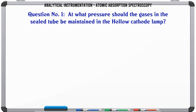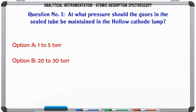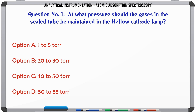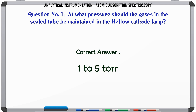At what pressure should the gases in the sealed tube be maintained in the hollow cathode lamp? A. 1 to 5 torr. B. 20 to 30 torr. C. 40 to 50 torr. D. 50 to 55 torr. The correct answer is 1 to 5 torr.